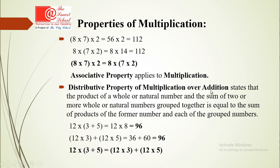The distributive property of multiplication over addition states that the product of a whole or natural number and the sum of two or more whole numbers equals the sum of the products of that number with each of the grouped numbers. For example, 12 multiplied by (3 plus 5) equals 12 multiplied by 8 equals 96. Also, (12 multiplied by 3) plus (12 multiplied by 5) equals 36 plus 60 equals 96. So distributive property is proved.